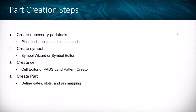I wanted to break down the part creation process into four simple steps. First, create the necessary pad stacks — the pins, pads, holes, or custom pad shapes we want to use in our footprint. Second, create the symbol using either the symbol wizard, which creates a symbol automatically from your data, or the symbol editor where you draw it by hand. Third, create cells using the cell editor or PADS LAN Pattern Creator. Finally, create the part by marrying the symbol and cell together.